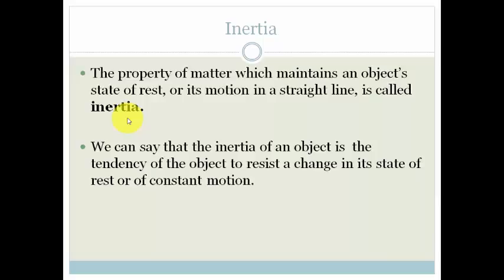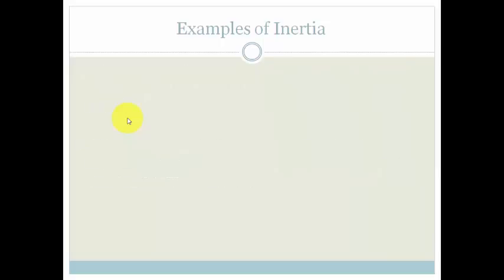And inertia is dependent on the mass of the object. The heavier the object is, then obviously the more difficult it is to change it because we have to have a bigger resultant or unbalanced force acting on it. So let's look at some examples of inertia.